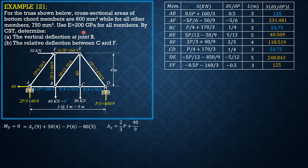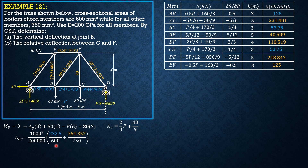The common conversion factor is 1,000² for newton-mm, divided by E which is 200,000 MPa. The vertical deflection at B equals (1,000²/200,000) times [sum of blue-colored products over area 600, plus sum of orange-colored products over area 750]. The blue sum is 232 and the orange sum is 764.352. Therefore, the vertical deflection at B is 7.033 mm downward.